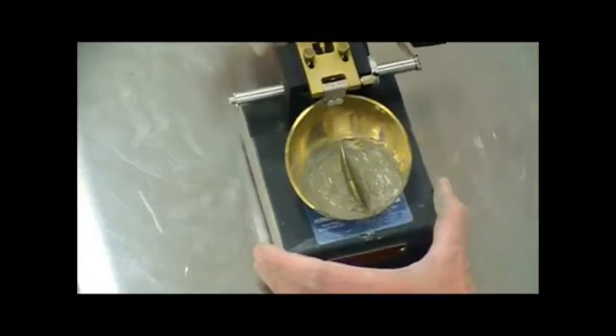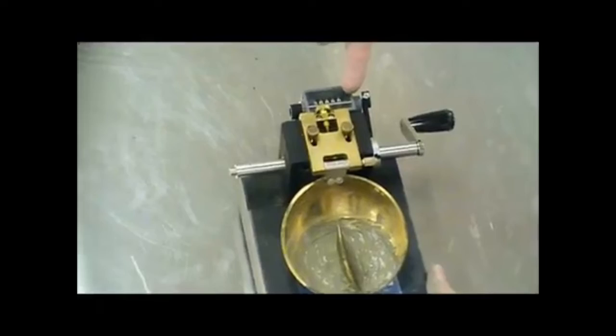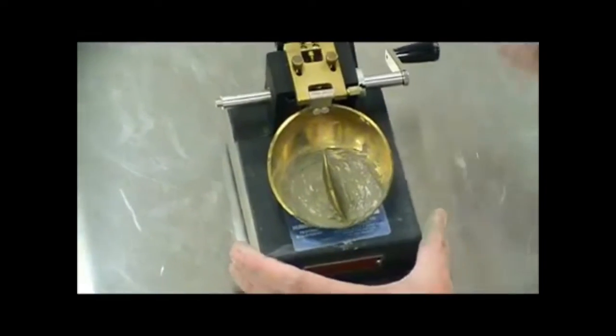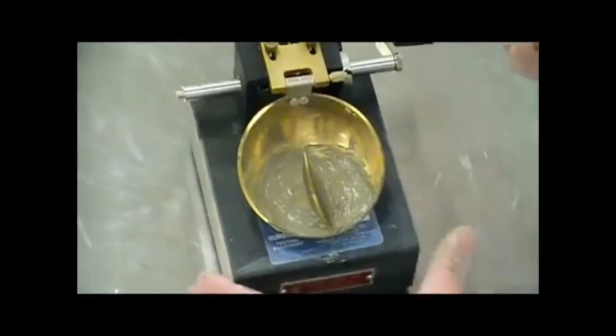The idea here is we're going to zero the counter and we're going to start counting the number of revolutions that it takes for that gap to close for a distance of half an inch.